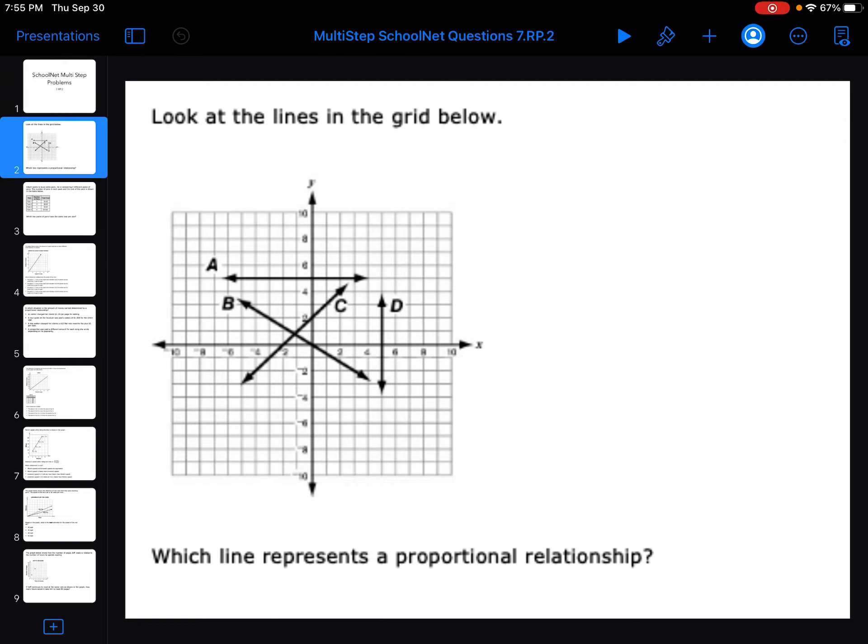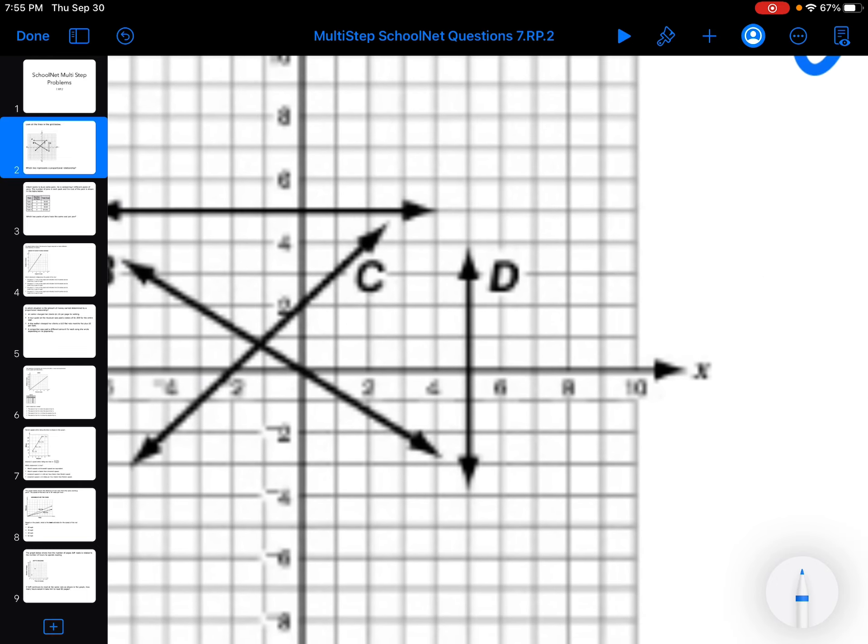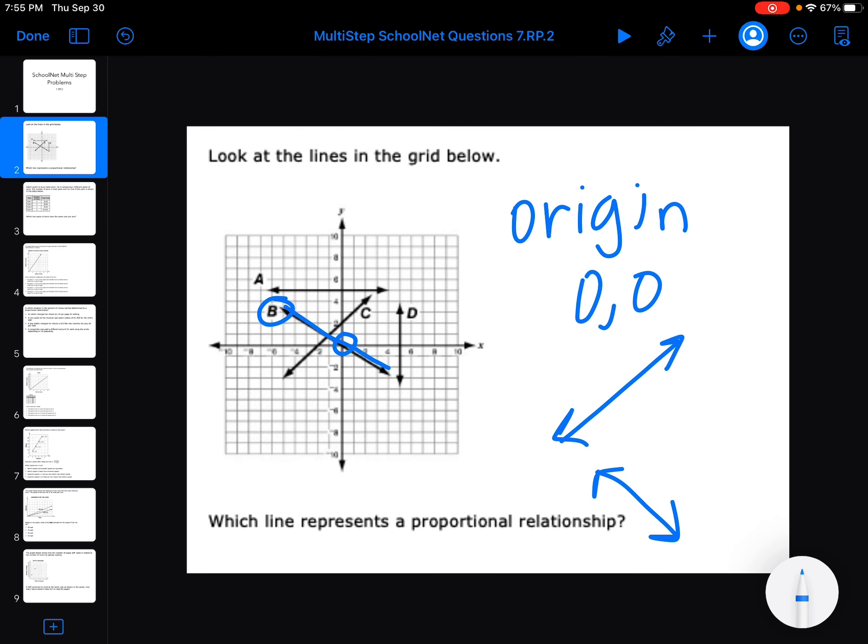Look at the lines on the grid. Which line represents a proportional relationship? To be considered proportional, you have to go through the origin, which is 0, 0, and be a straight line. It doesn't matter which way your straight line goes, but it needs to go through the origin. So the only one that's going through the origin is B, and B is a straight line. So your answer has to be B.